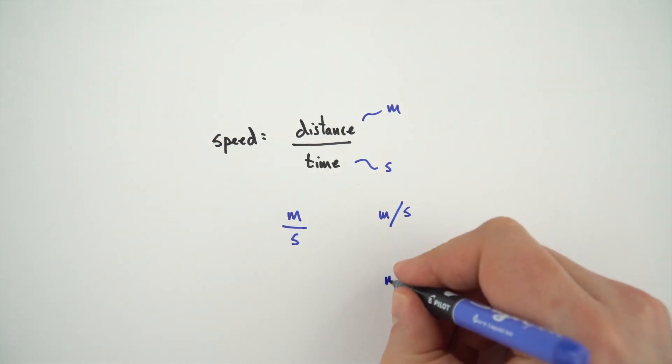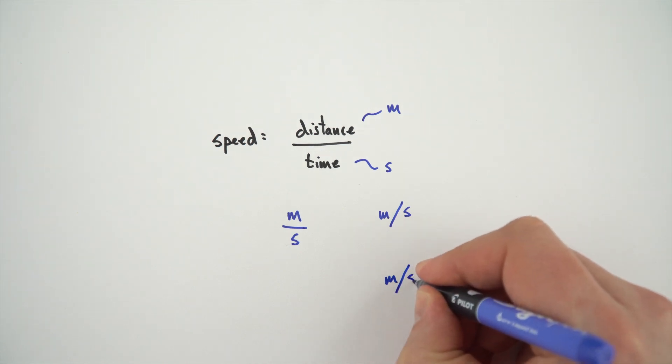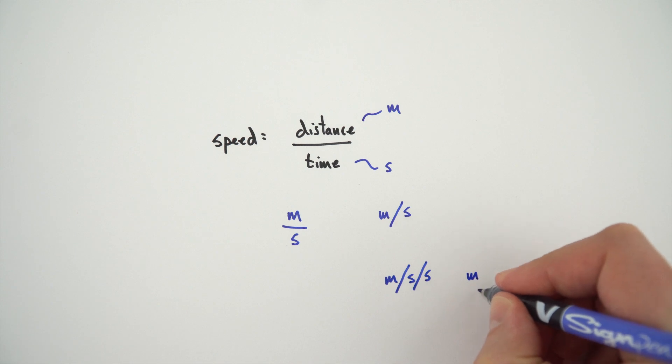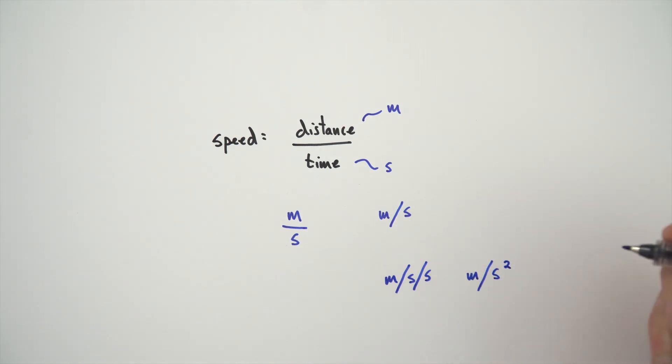Now there are other derived units as well. For example, if we're looking at acceleration, we're looking at the amount of meters per second per second. And we write this as meters per second squared. Or looking at density, we're looking at kilograms per cubic meter. So what we have here are derived units which are made up from some of the seven base units.